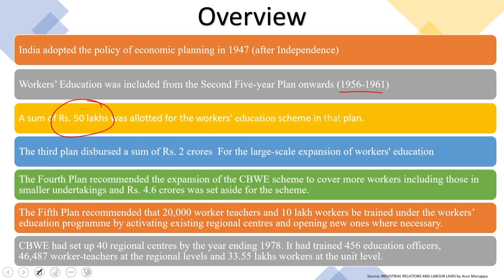The country had initially taken up the initiative, maybe on a very small scale, but considering the economic scenario during the early 1950s, rupees 50 lakhs as part of the second plan was a generous amount. The third plan disbursed a sum of rupees 2 crores for the large-scale expansion of workers education. The fourth plan recommended the expansion of the CBWE scheme to cover more workers including those in smaller undertakings, and rupees 4.6 crores was set aside for the scheme specifically.